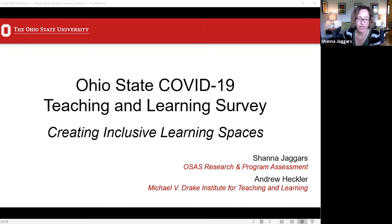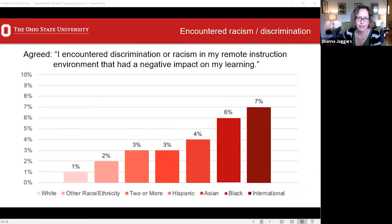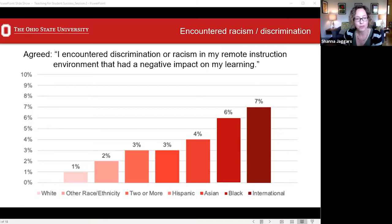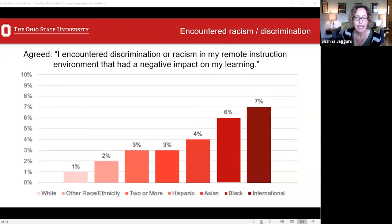There were many findings, some of which are covered in other webinars in this series. For today, I wanted to discuss some findings related to equity and inclusion. I'm going to start with a question we included regarding encounters with discrimination or racism in the remote environment. At the time the survey was fielded, there were a lot of national media reports about Zoom bombing. This figure shows the percentage of each racial or ethnic category who agreed that this happened to them, based on federal reporting standards. Among white, non-Hispanic domestic students, only 1% said they encountered discrimination or racism, while among international students, 7% did, and among Black or African-American students, 6% did.